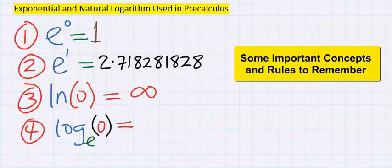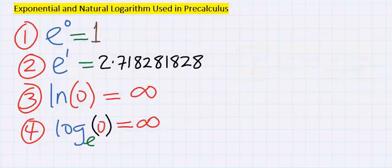Next, when written to base e is still undefined, that is it tends to infinity and does not exist.